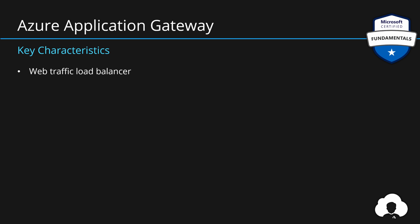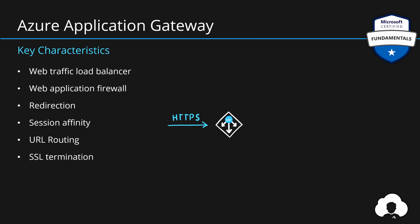To summarize: Application Gateway is your web traffic load balancer in Azure, with features like a web application firewall allowing you to scan all incoming traffic, redirection capabilities, session affinity when you want users to always be directed to the same servers, URL routing, and SSL termination — which allows customers to decrypt traffic on the Application Gateway and send an unencrypted version to backend services to reduce processing power required, increasing the scalability of your solution. For the fundamentals exam, just remember this is a load balancer designed for distribution of web-based traffic.